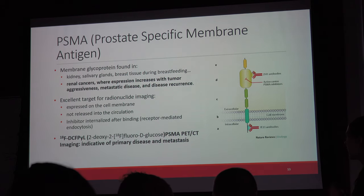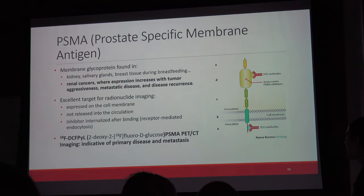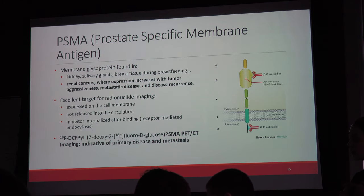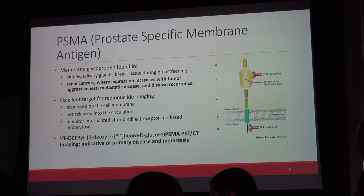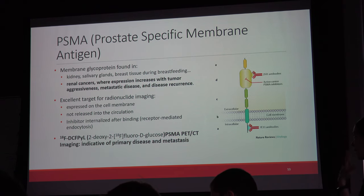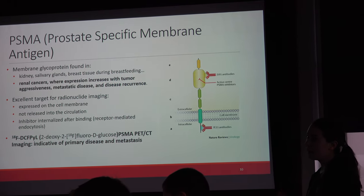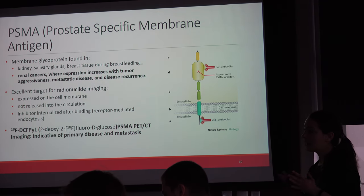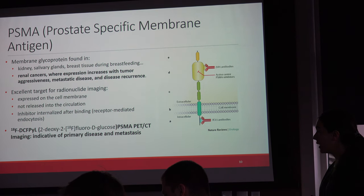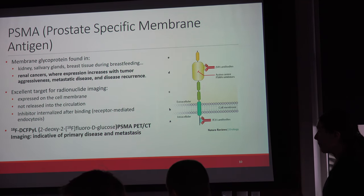We're performing PSMA — prostate-specific membrane antigen — PET imaging on these patients. PSMA is a protein found constitutively in the kidney, salivary glands, and prostate. We know it's also found in renal cancers, where expression increases but is not necessarily correlated with tumor aggressiveness, metastatic disease, or recurrence. Importantly, we can use inhibitors to detect PSMA — the inhibitors are internalized and stay put — meaning we can use a radiolabeled isotope to detect where primary or metastatic disease is located.